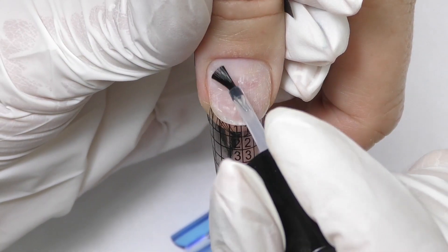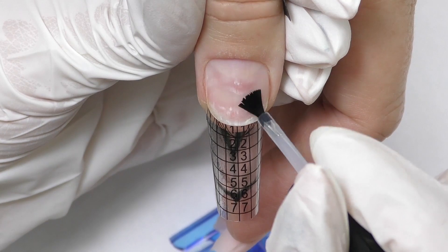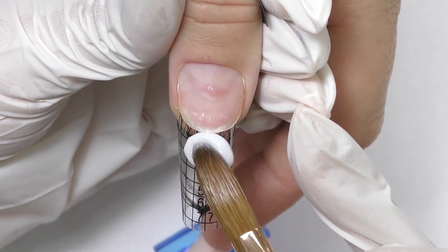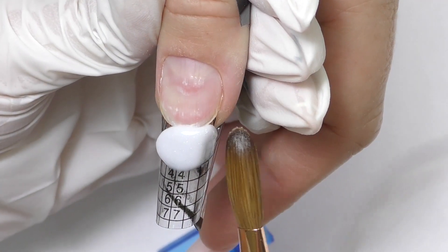I already prepped the nail and applied the form. Now I'm applying dehydrator and do not forget about non-acid primer and I usually start with the free edge.